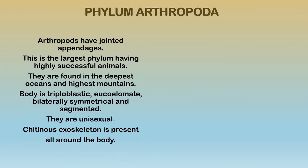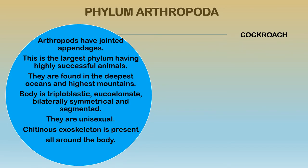Arthropoda is a very interesting phylum — it is the largest phylum with successful animals found even in the deepest oceans and the highest mountains. The main characteristic is that they have jointed appendages — appendages are extra parts of the body attached to the main body, like our hands and legs. In arthropods such as spiders and cockroaches, the legs are jointed and move in separate right and left directions.